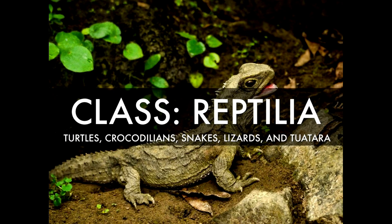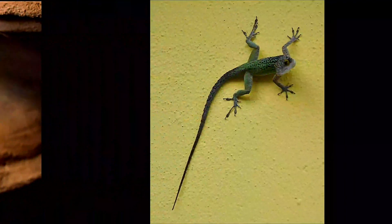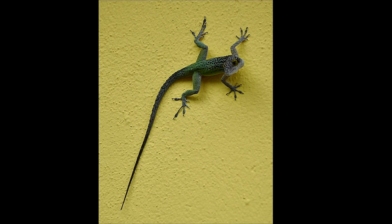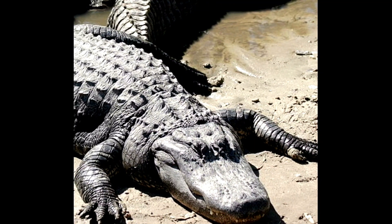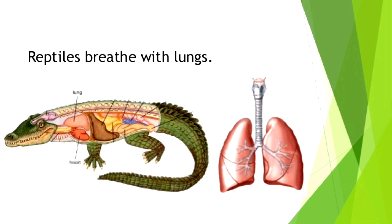Class Reptilia. Animals of Class Reptilia live on land. They crawl on the land or on walls, so they are also known as crawling animals. Their body is covered with hard, rough or horny scales. They breathe through lungs.